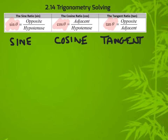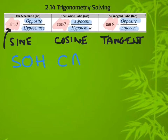One thing students do all the time — and it's understandable — is they call this 'sin.' It's not sin, it's sine. The key is memorizing opposite to hypotenuse, adjacent to hypotenuse, opposite to adjacent. A typical way to memorize that is SOH-CAH-TOA: sine is opposite over hypotenuse, cosine is adjacent over hypotenuse, and tangent is opposite over adjacent.